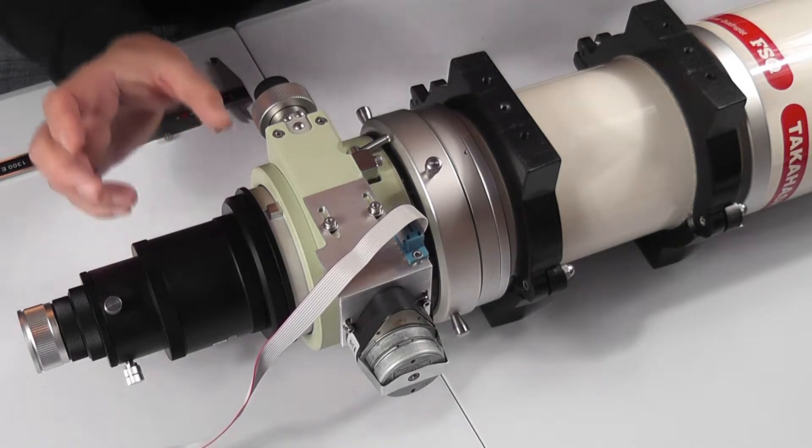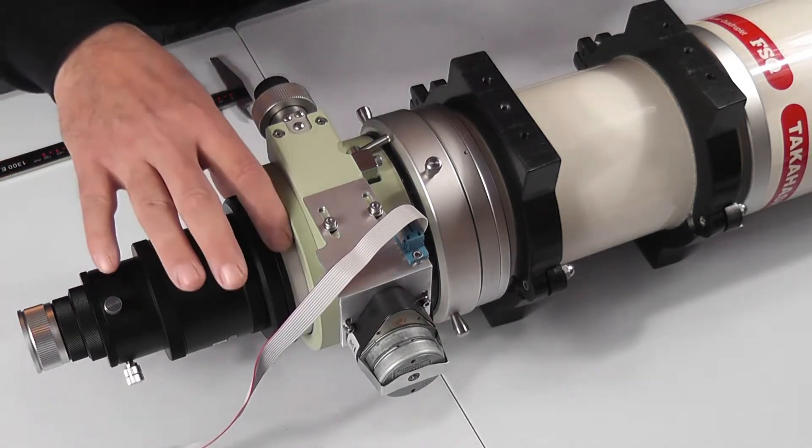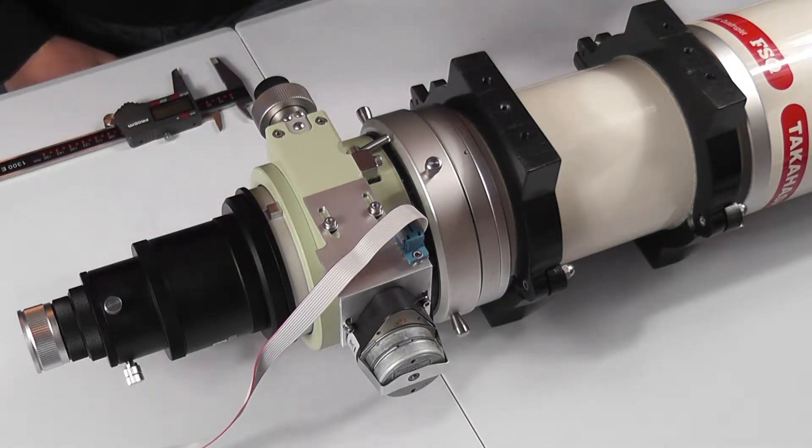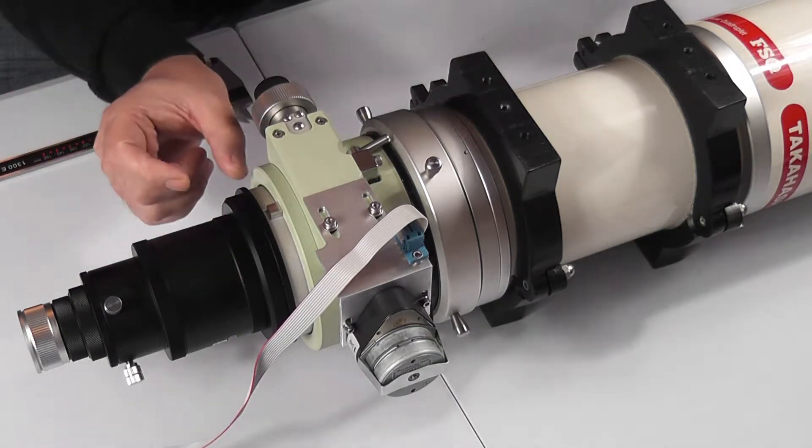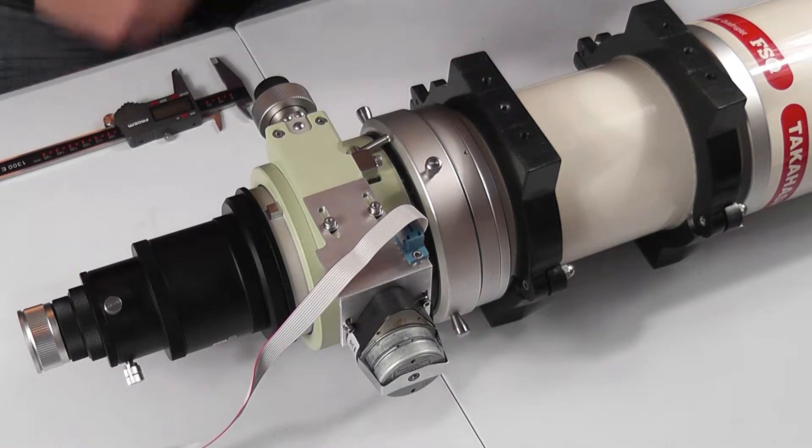And then write that measurement down because you will need that. I happen to know that the Takahashi is 30mm—I've measured that. So when we do a calibration routine I'm going to set mine to 28mm. You don't want the focuser going all the way out to the stop because that can cause damage, particularly on a mechanical focuser or a rack and pinion as opposed to a Crayford.